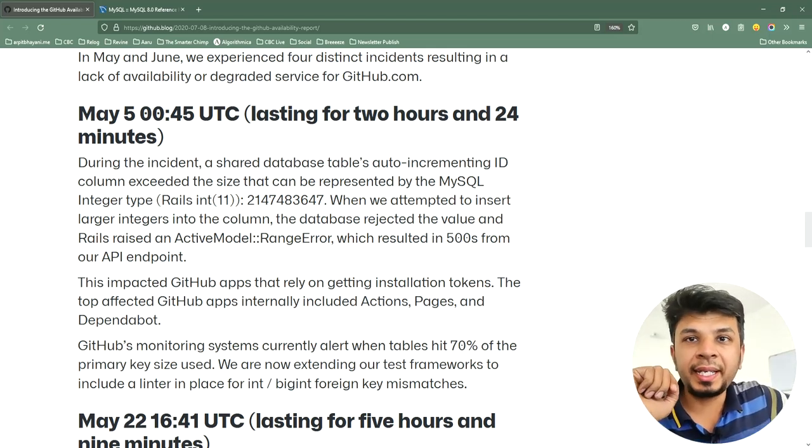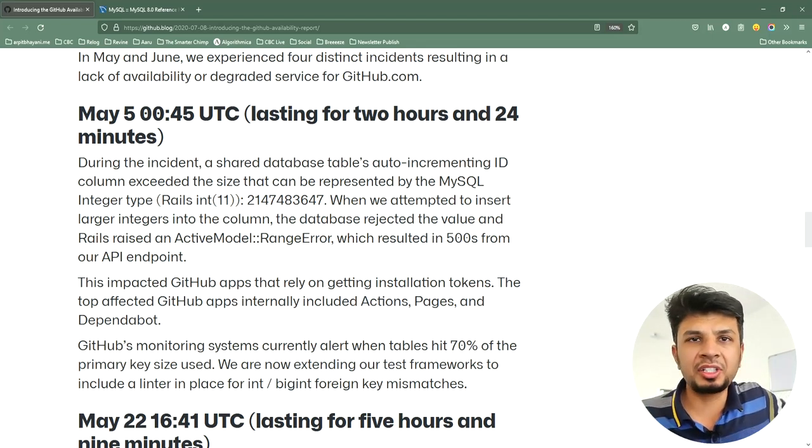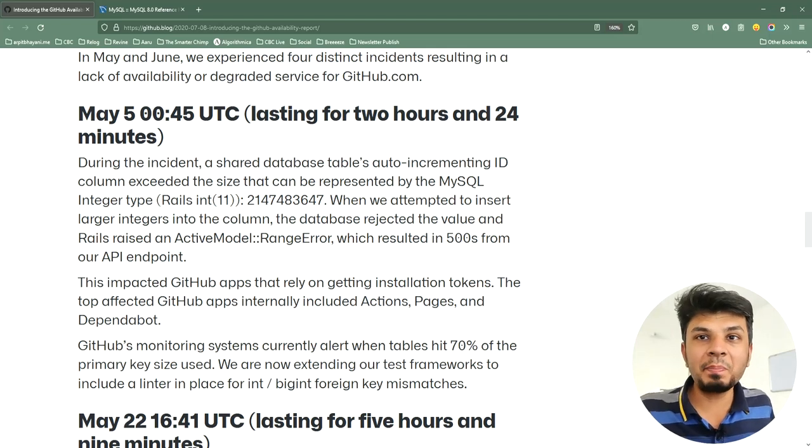So on 5th of May 2020, GitHub experienced a minor outage. It affected their services like Actions, Pages and Dependabot. The outage happened because their MySQL table hit its integer limit. The ID was set to an auto-increment ID and it hit its limit.